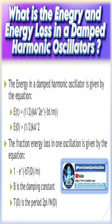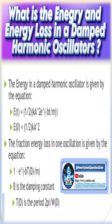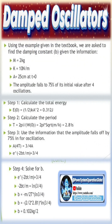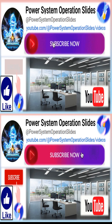Generally all types of vibrations are more or less damped, so it is necessary to compensate the energy losses by supplying additional energy from an external agency to make the oscillations undamped.